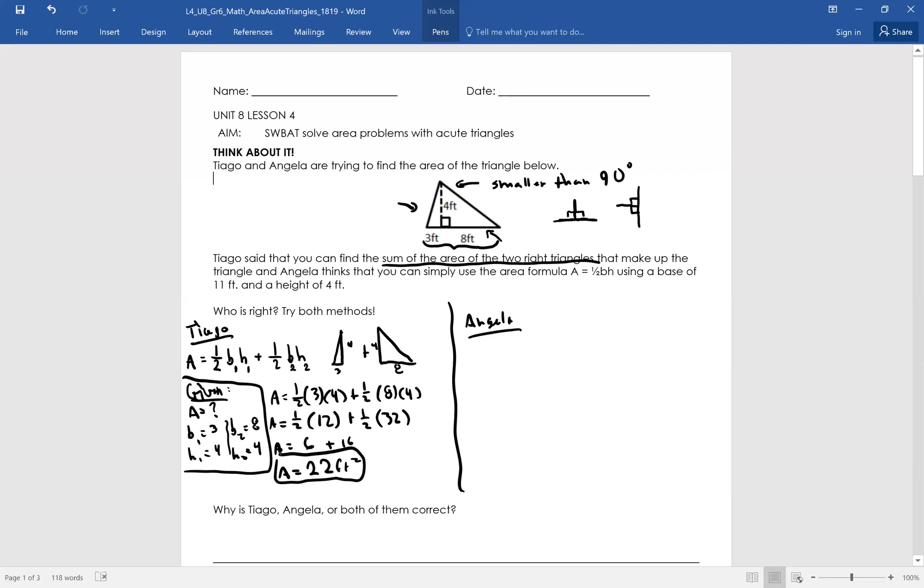Looks complicated, right? It may or may not be, but that's a process that he chose to use. He simply split up the two triangles, found the area of each of them, and added them.